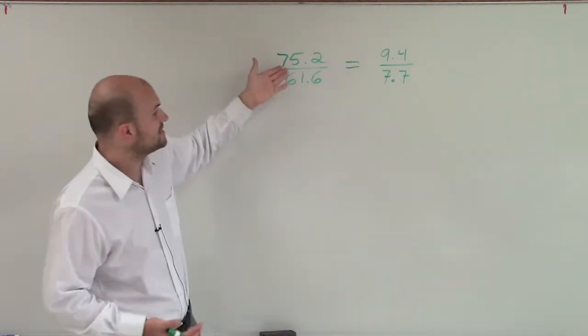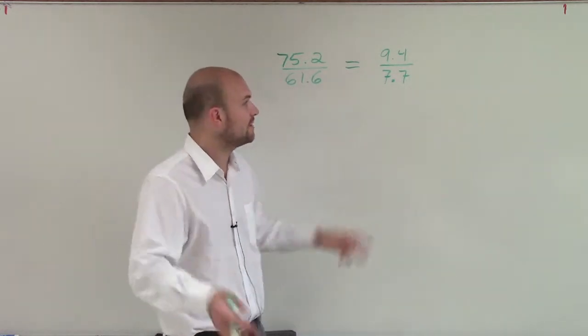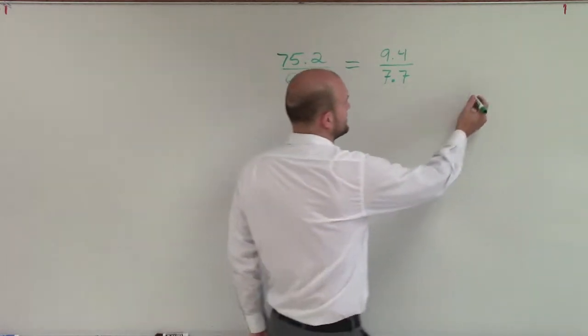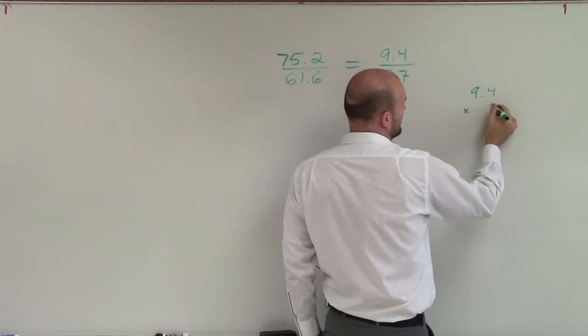And now, without a calculator, you could easily just take 75.2 and divide it by 9.4. But I don't have a calculator, so what I'm going to do is just estimate and say, what if I take 9.4 and multiply it by 8?